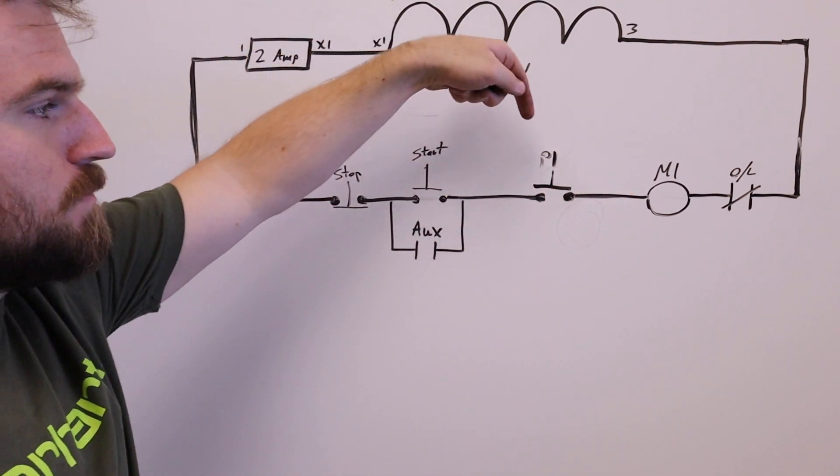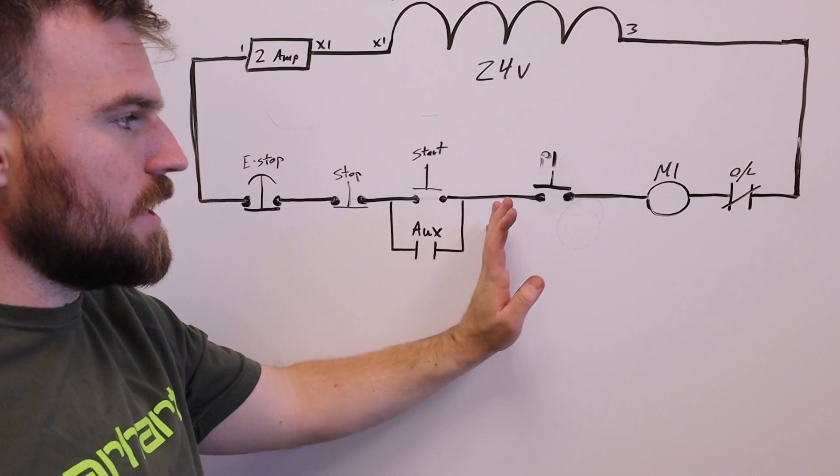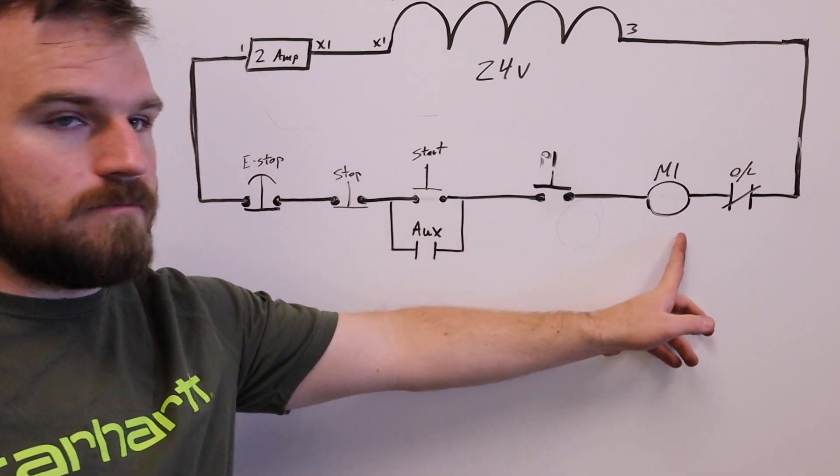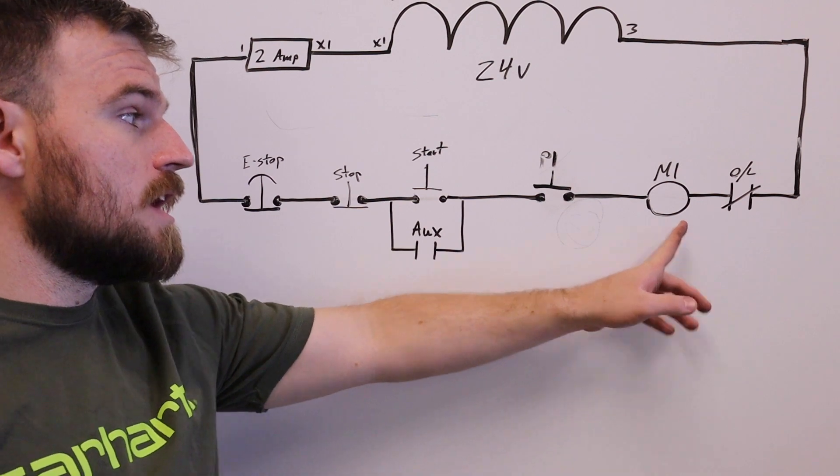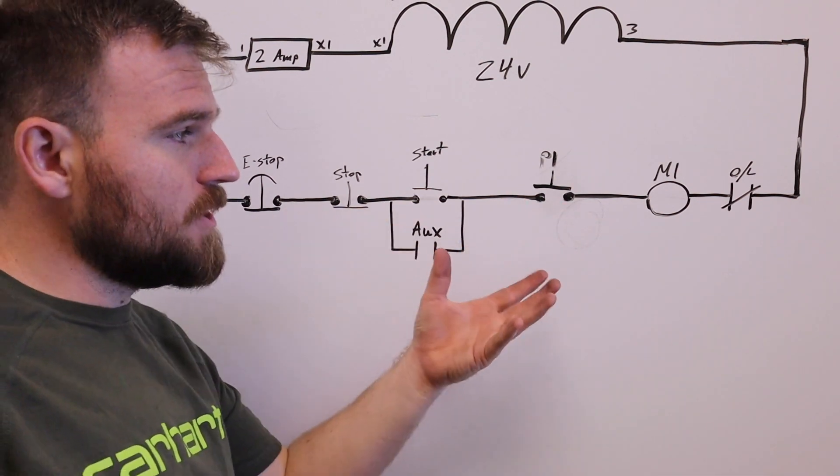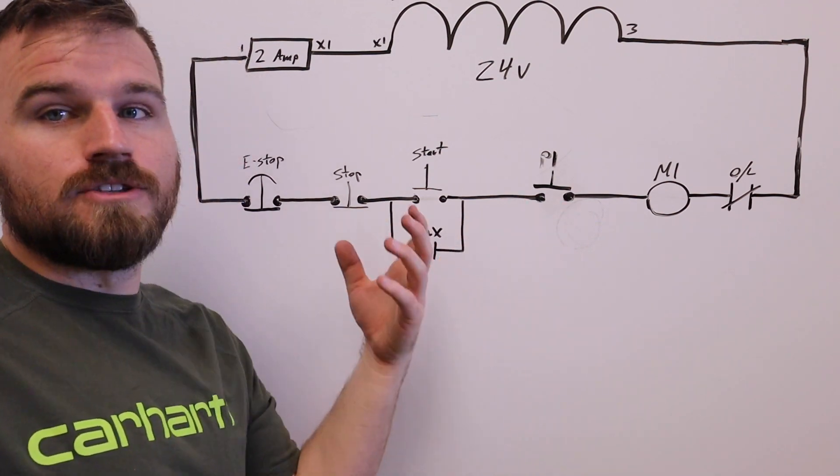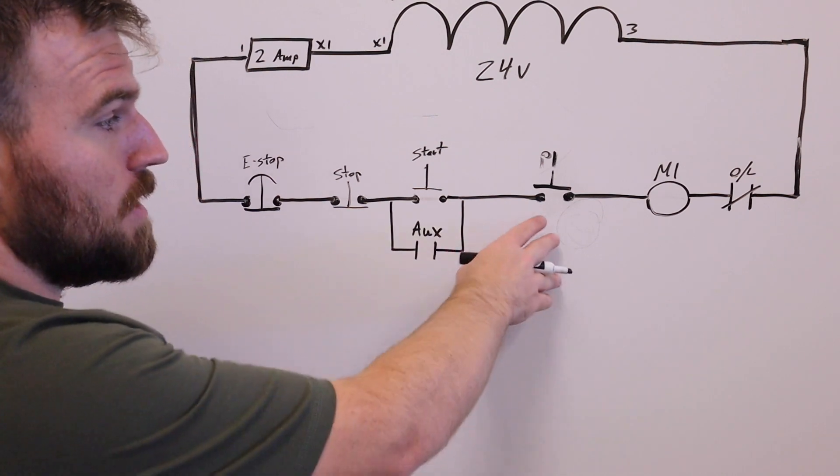So if that button is not pressed, the power flowing through our circuit cannot make it to our motor control. This is pretty simple logic here. But now the more difficult part of this is we need to hook up that light to that button.